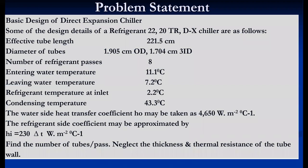For this topic we focus on DX type evaporators. We go directly to the problem statement: this is a basic design of a direct expansion chiller. Some design details are given — a 20 TR DX chiller. Effective tube length is given, diameter of tubes inner and outer side is given. In a DX type evaporator, refrigerant flows through the tubes and water, which is to be cooled, flows through the shell.